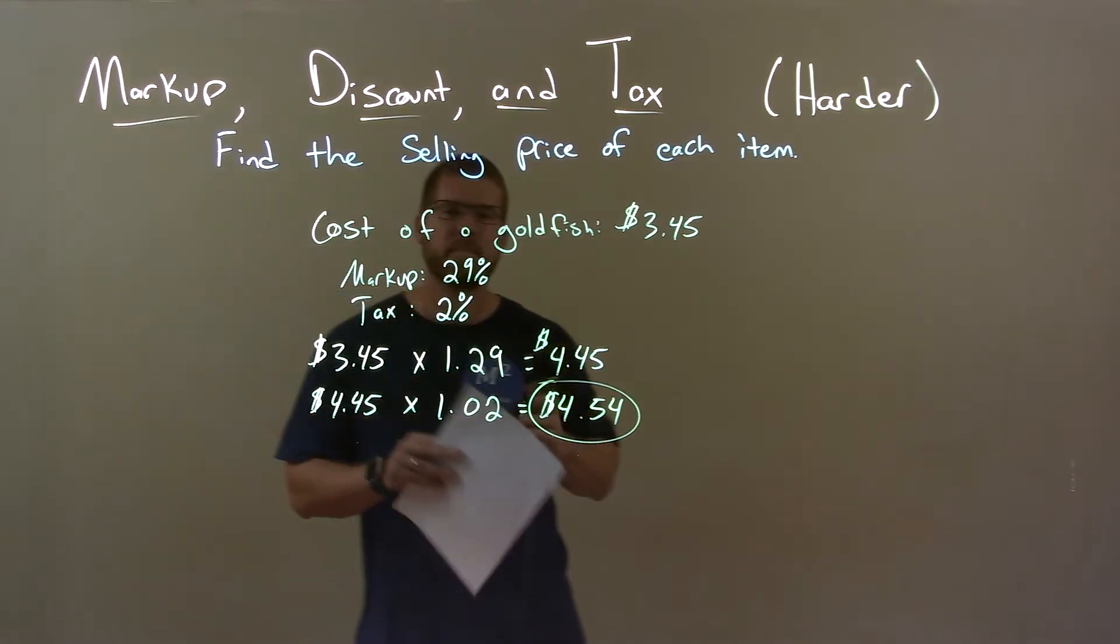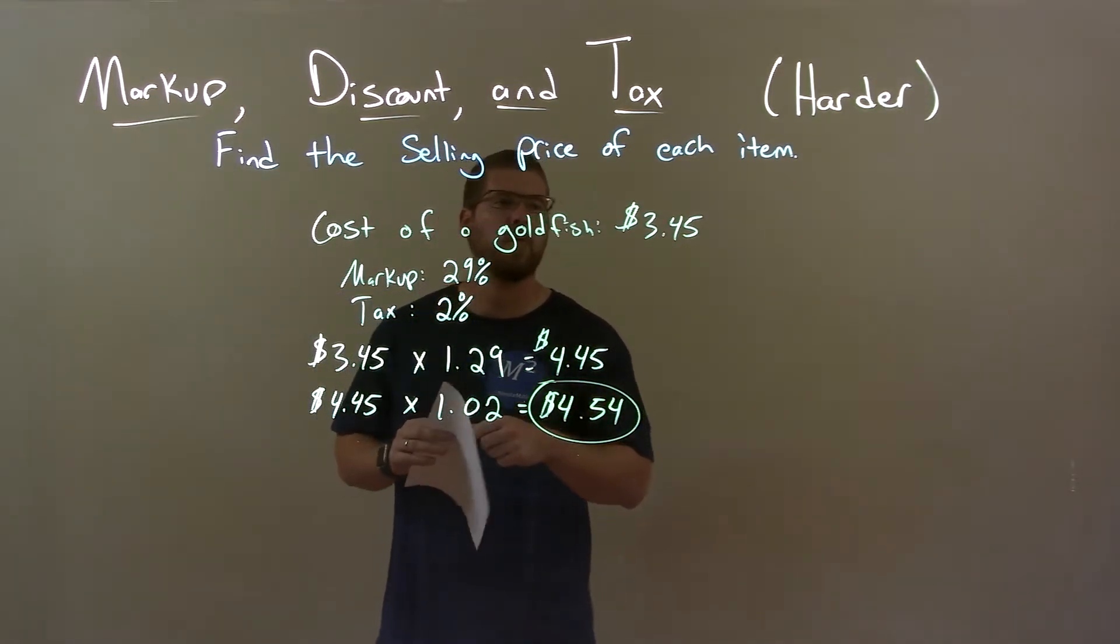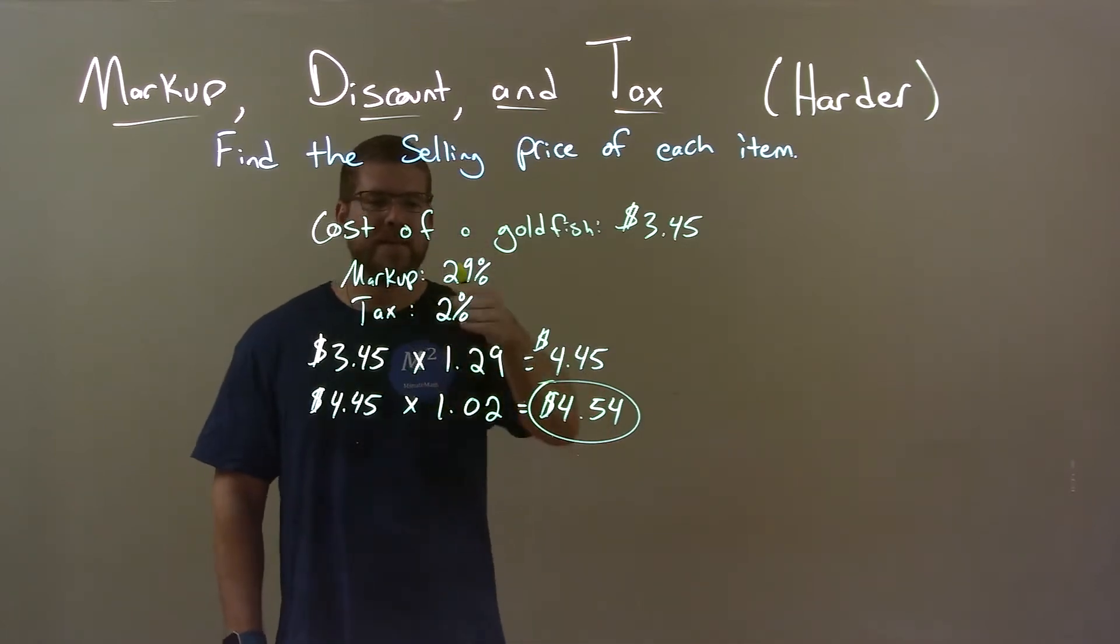Okay, so quick recap: the cost of the goldfish is $3.45, the markup is 29%, and the tax is 2%. We start with the cost.